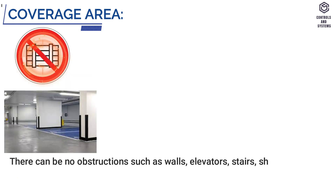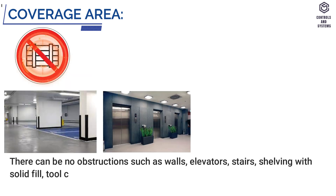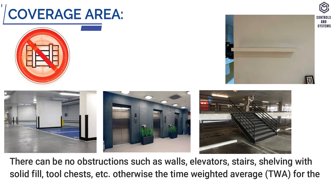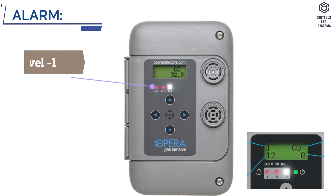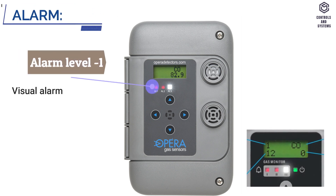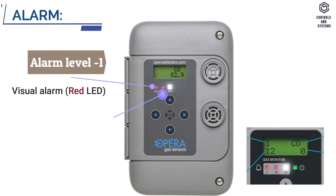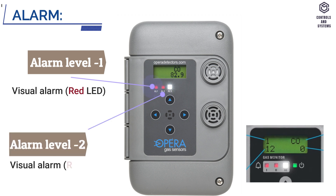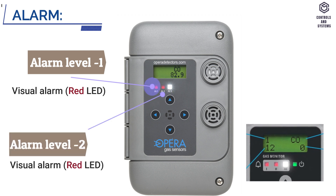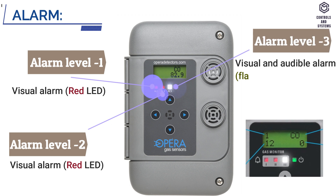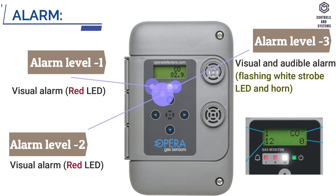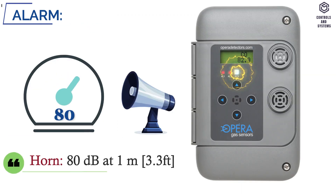There can be no obstructions such as walls, elevators, stairs, shelving with solid fill, tool chests, etc. Alarm level 1: visual alarm — red LED. Alarm level 2: visual alarm — red LED. Alarm level 3: visual and audible alarm — flashing wide strobe LED and horn. Horn is 80 dB at 1 meter.